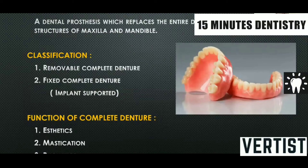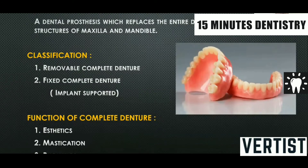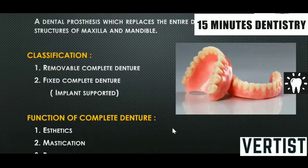We will begin with the first part, that is complete dentures, then removable partial denture and fixed partial denture. A complete denture is a dental prosthesis which replaces the entire dentition and associated structures of the maxilla and mandible. Classification: it can be a removable complete denture or a fixed complete denture with the help of implants.